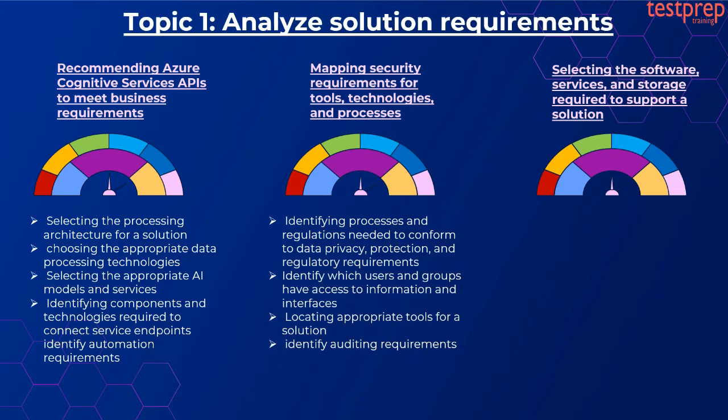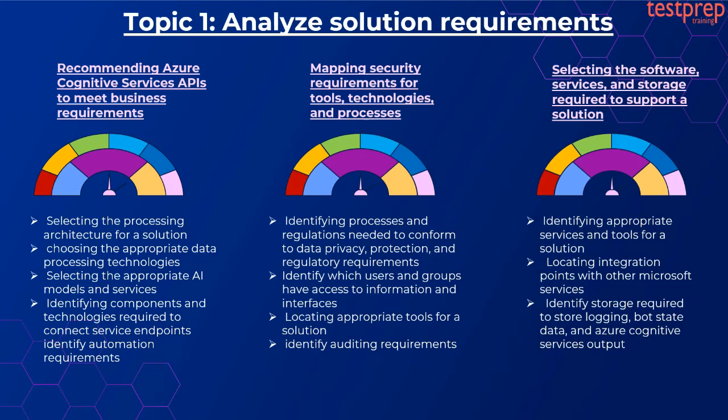Number three, selecting the software, services, and storage required to support a solution. It contains three subtopics: first, identifying appropriate services and tools for a solution; second, locating integration points with other Microsoft services; third, identifying storage required to store logging, bot state data, and Azure Cognitive Services output.